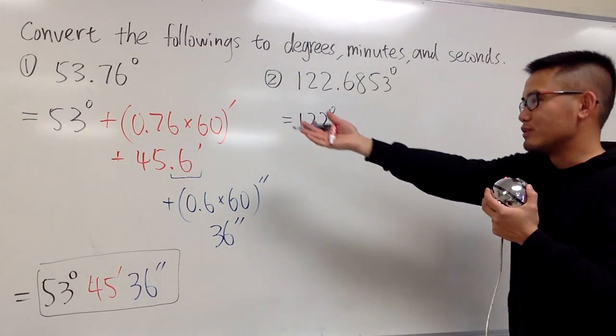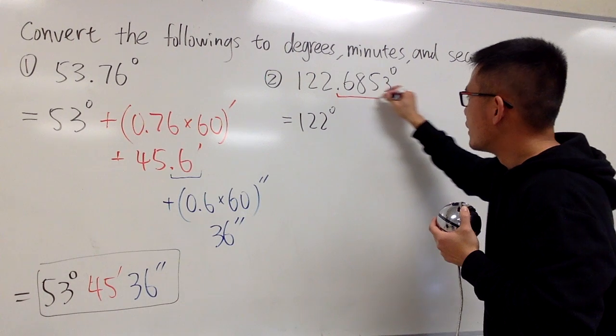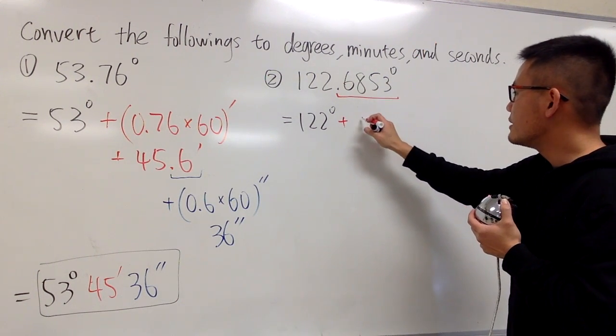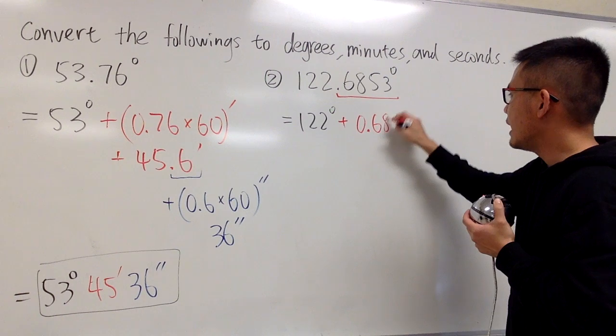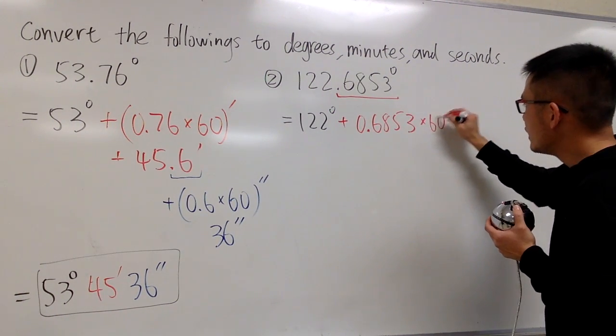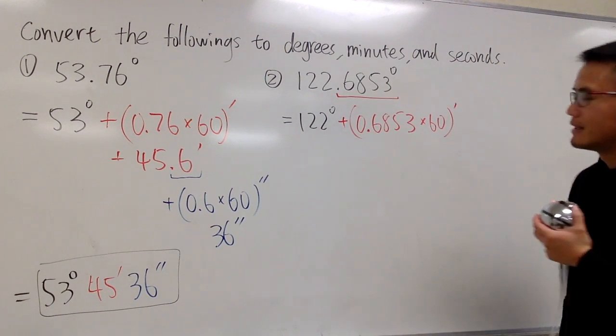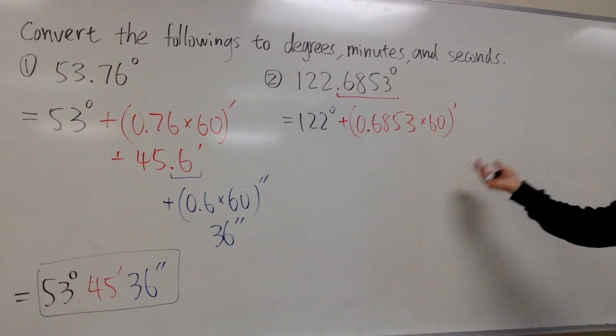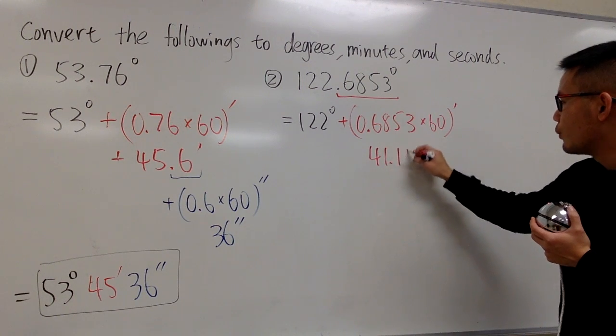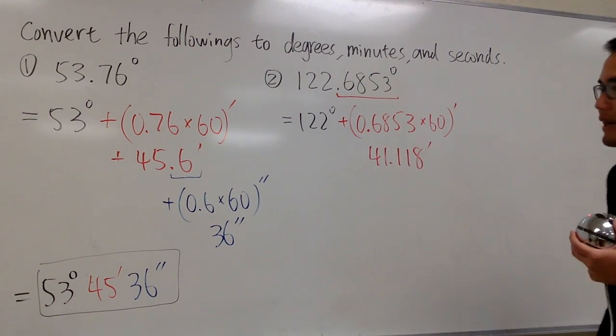And we do the same thing as what we did earlier. This part, the decimal part for the degrees, we will have to take this and say this is 0.6853. And if we multiply this by 60, we will be able to change this into minutes. Just do this on your calculator, you will get 41.118 minutes.